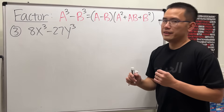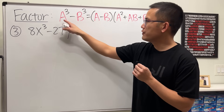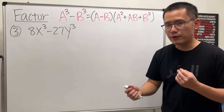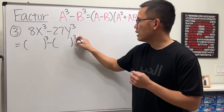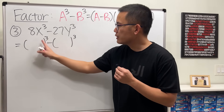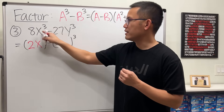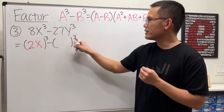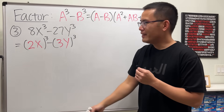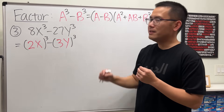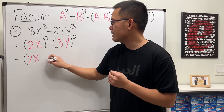For number three we have 8x cubed minus 27y cubed — a difference of two cubes situation. Open two sets of parentheses with third power on the outside. What to the third power gives us 8? That's 2, and we also need the x. What to the third power gives us 27? That's 3, and we need a y. This is our a and b, so the first factor is a minus b: 2x minus 3y.